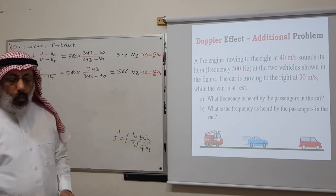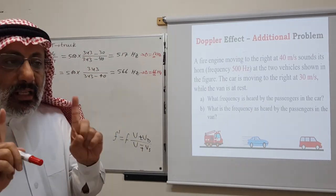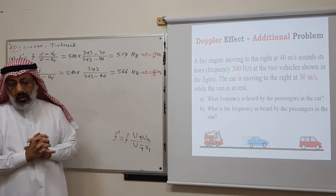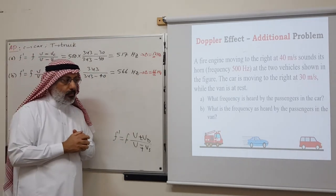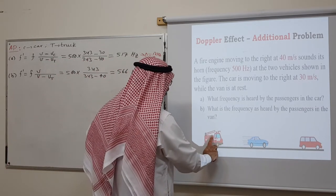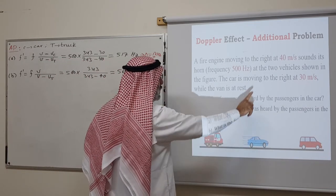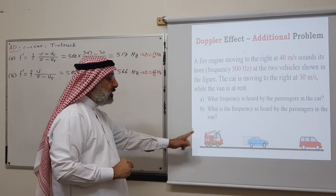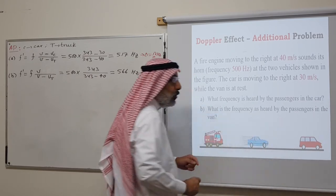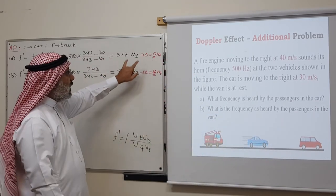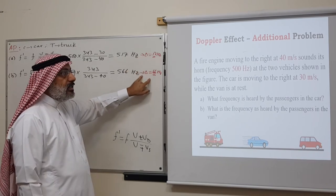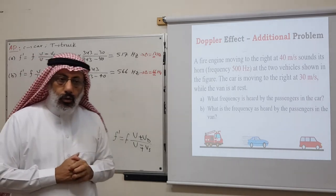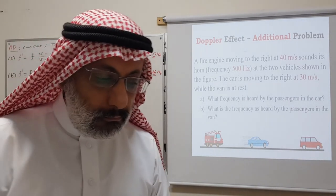The frequency shift for the car is 517 − 500 = 17 Hz, while for the van it is 566 − 500 = 66 Hz. The shift is higher for the van because the relative velocity between truck and van is 40 m/s, versus only 10 m/s between truck and car. As relative velocity increases, the frequency shift also increases.